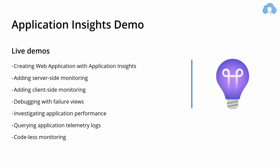That concludes how Application Insights can help within your applications, and now we can go to live demos. Today we're going to do a lot of live demos. First, we'll create a web application in Azure and attach Application Insights. Then we'll create server-side monitoring using .NET Core, client-side monitoring for a jQuery-like application, and debug with failure views — I'll imitate some issues and try to debug live. Additionally, I'll investigate performance, query application telemetry logs in Log Analytics, and lastly show you codeless monitoring of Application Insights.